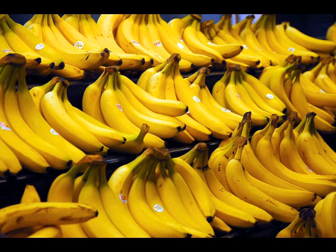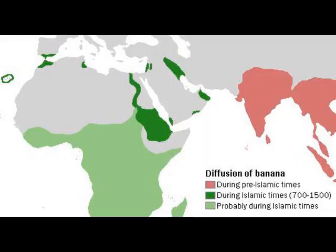The old scientific name Musa sapientum is no longer used. Musa species are native to tropical South and Southeast Asia, and are likely to have been first domesticated in Papua New Guinea.